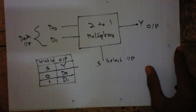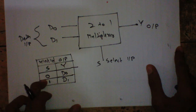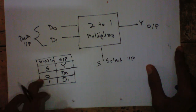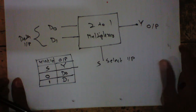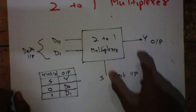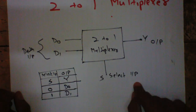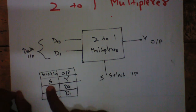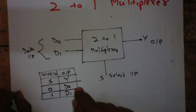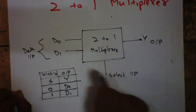You will come to know why that is with the help of the logical circuit of the 2-to-1 multiplexer. For now, just go through this: when S is 0, output will be D0, and when S is 1, output will be D1.